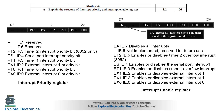The interrupt priority register contains eight bits, which correspond to setting or resetting the priorities. PX0 corresponds to the external interrupt zero priority bit, and PT0 corresponds to the timer zero interrupt priority bit. Similarly, there are six bits total; the other two bits are reserved for future use.